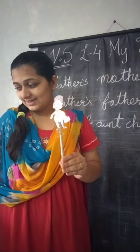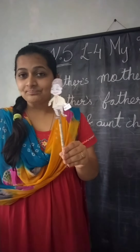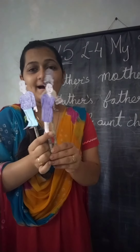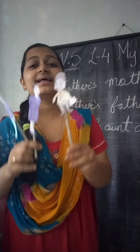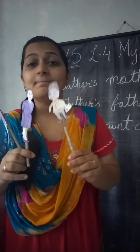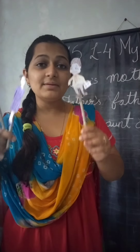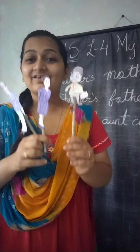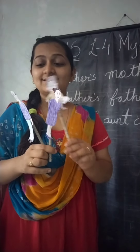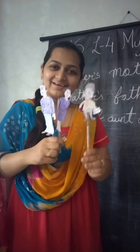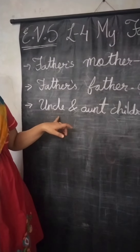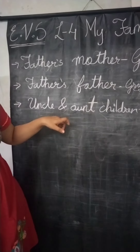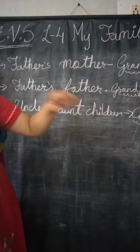So now kids, aapke papa ke mummy aur papa aapke kya huye? Dada-dadi, right? Aur dada-dadi ko kya bulte hai? Grandparents. Parents matlab mummy papa — mummy papa se bhi bade koun huye? Grandparents. So dada-dadi ko kya bulte hai? Grandparents.